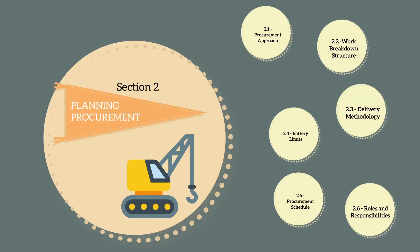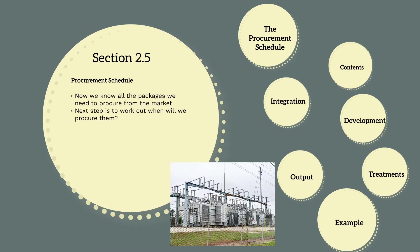Welcome to section 2.5: the procurement schedule. Now we've worked out all the packages we need to procure from the market, the next step is to work out when we will procure them. We do this by identifying, for each package, when the goods and services need to be on site and when the design has progressed enough to be able to issue the package to market.